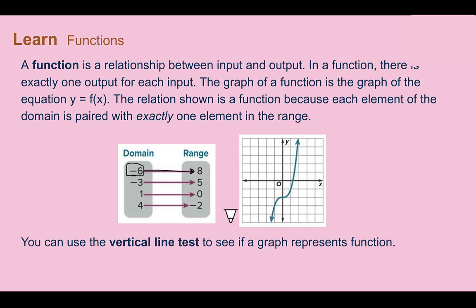Think about it like a vending machine. If you push the button for Sprite and the vending machine is working properly, a Sprite comes out. If you push the button again and root beer comes out, you would say it's not a functioning vending machine because you get different things each time. A function works the same way — only one thing comes out.